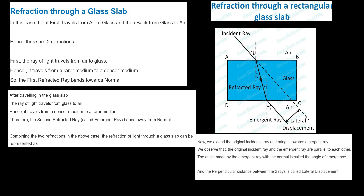Why do we call the glass slab a denser medium? Because the particles are very close to each other, we call it a denser medium. When light travels from a rarer medium to a denser medium, it bends towards the normal. The same thing we observe here — it bends towards the normal.